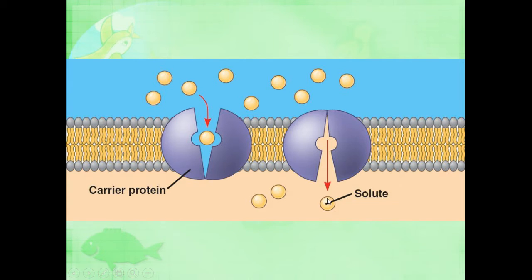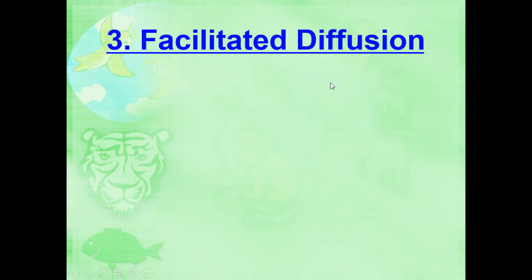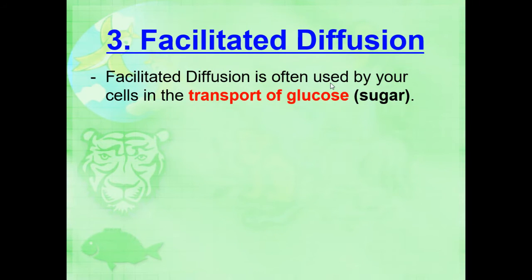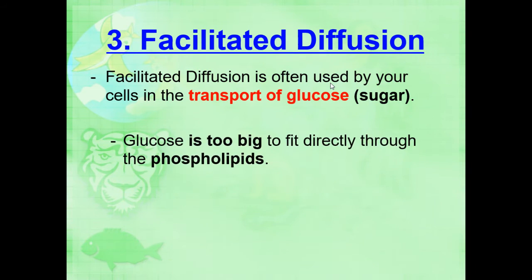Now, likewise, it can also take things inside of the cell, suck them back in, and spit them back out. Facilitated diffusion is often used by your cells in the transport of glucose, which is sugar. Your cells need glucose in order to continue functioning. It's that carbohydrate, so short-term energy.